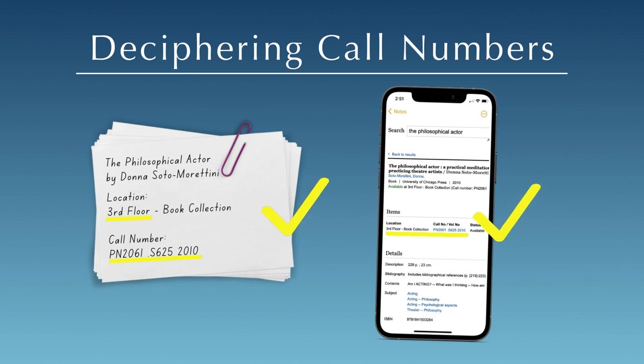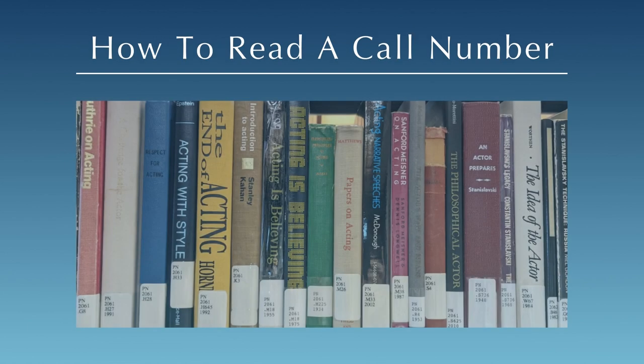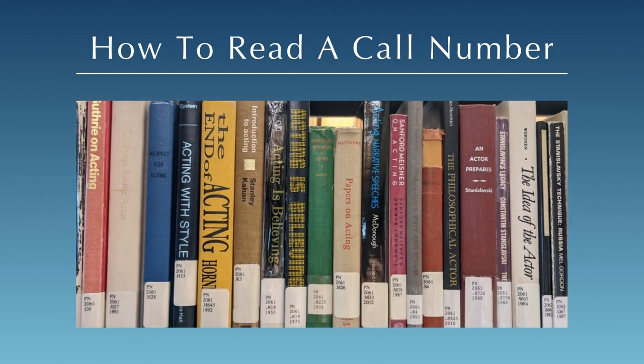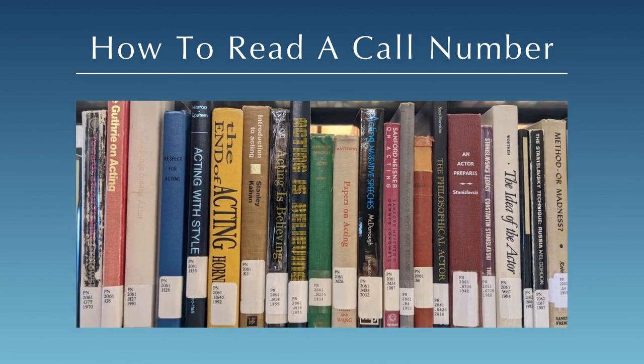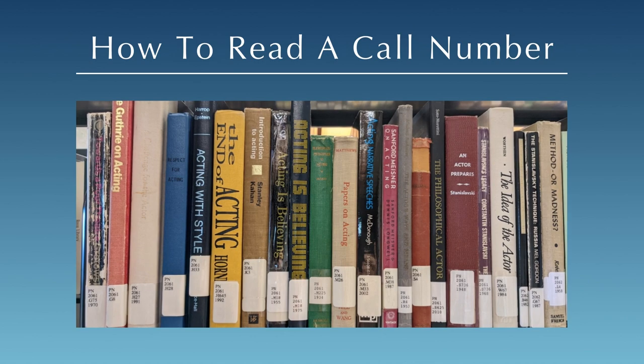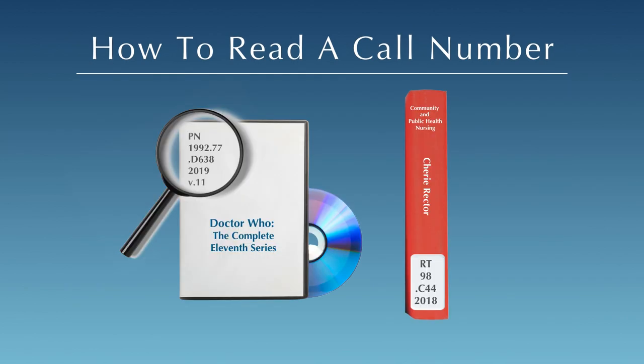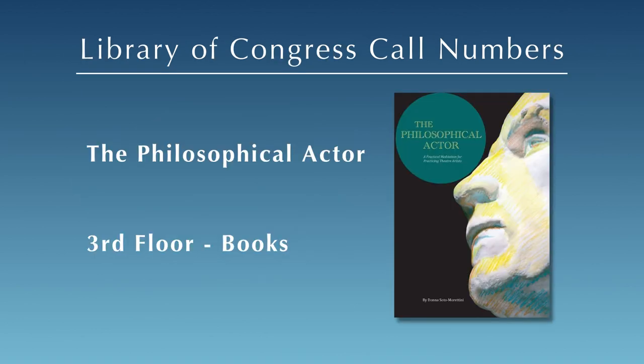Be sure to write down the call number or take a screenshot to refer to as you search the stacks. Every item in Roo Library is assigned a call number based on its subject. The call number is usually located on the spine of a book, but may also be located on the front of an item.